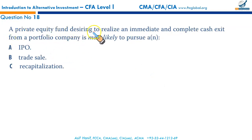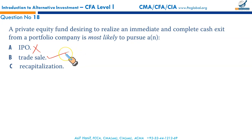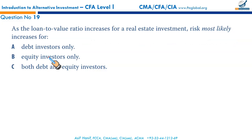A private equity fund deciding to realize an immediate and complete cash exit from a portfolio company is most likely to pursue a trade sale — correct. Private equity funds can realize an immediate cash exit through a trade sale, whereas an IPO would be difficult to exit immediately. That makes B the correct option.